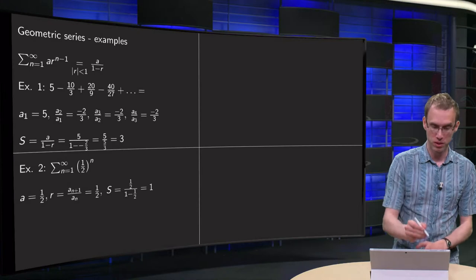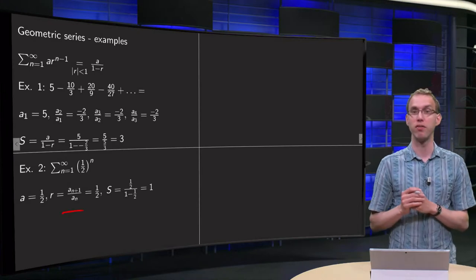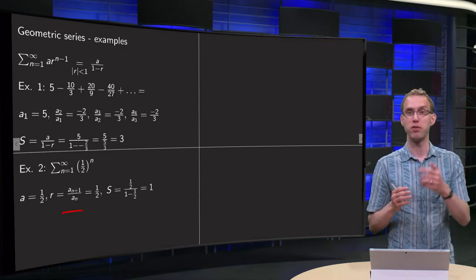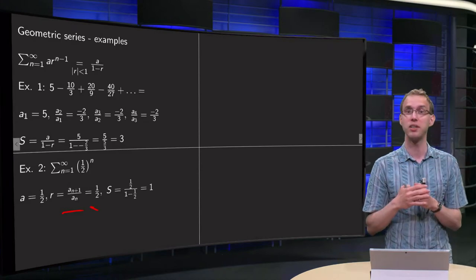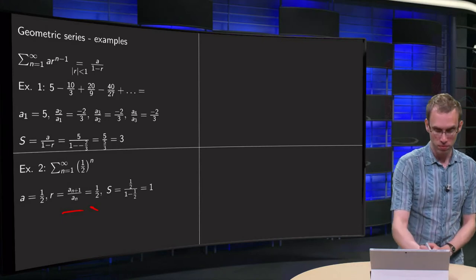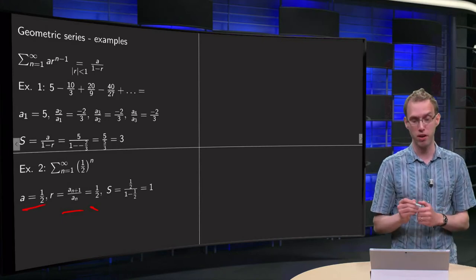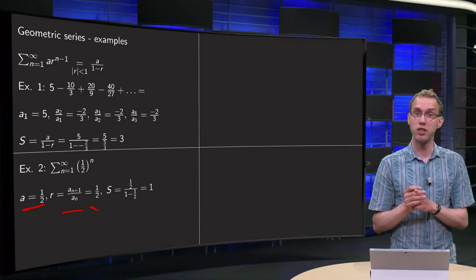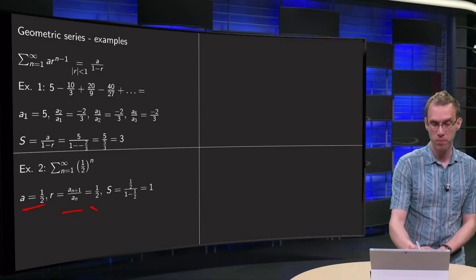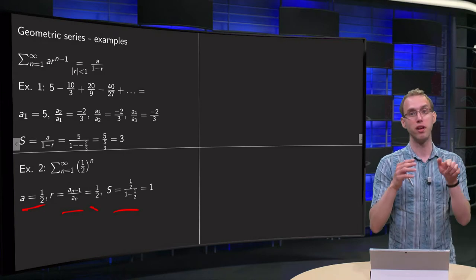because if you compute a n plus 1 over a n, you get 1 half to the power n plus 1 divided by 1 half to the power n, it is always 1 half, so this is also a geometric series, with ratio 1 half, first term is also 1 half, so the sum s converges because the ratio is smaller than 1 in absolute value, so the sum equals 1 half divided by 1 minus r, 1 minus 1 half,